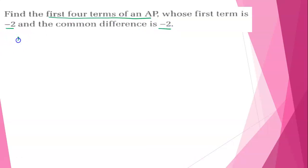So here first term is minus 2 and the common difference is minus 2 and we need to find first 4 terms. So first term is this. We need to find A2, second term, third term and fourth term.